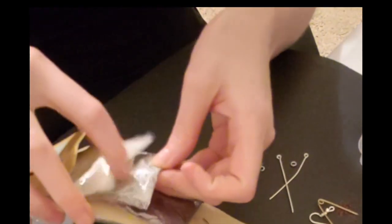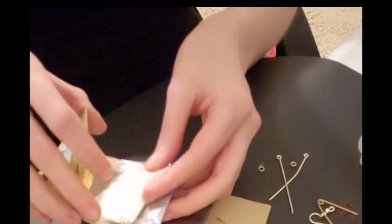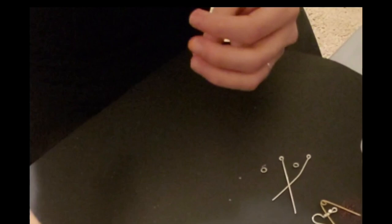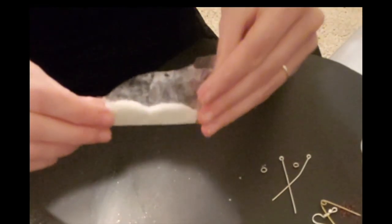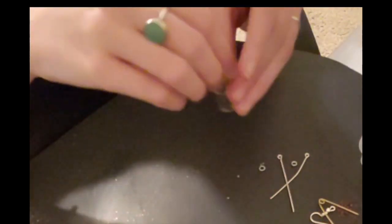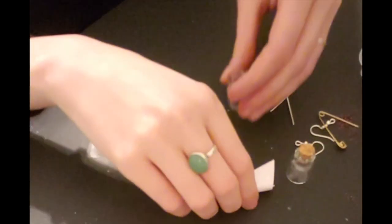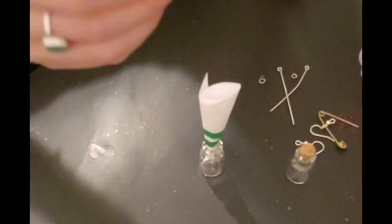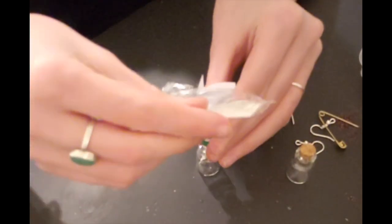And now we're going to pick our glitter. And I think I really like the white. So we're gonna go ahead and use the white. So I already have a white open. So we're gonna go ahead and pour this in.